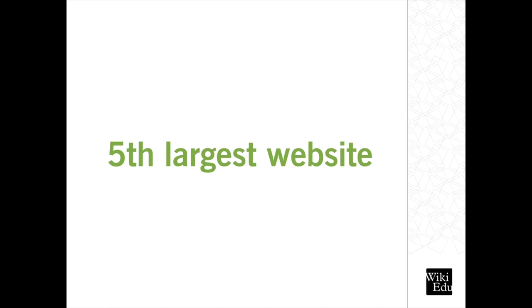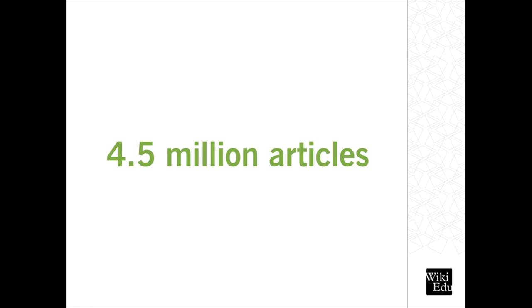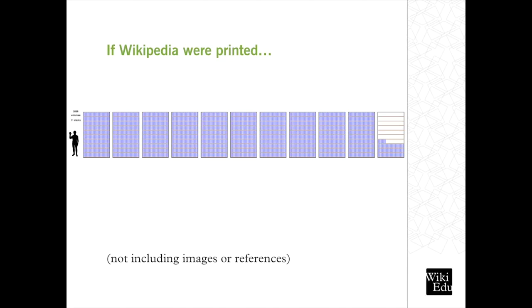For starters, it's the fifth most visited website in the world. English Wikipedia alone has 4.5 million articles, which, if you printed this out, would make up 2,000 volumes of a traditional encyclopedia. This means that Wikipedia is a huge online reference — a tertiary source that summarizes research and information about millions of topics for its readers.